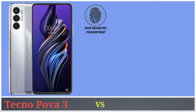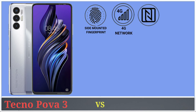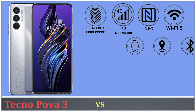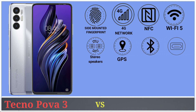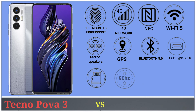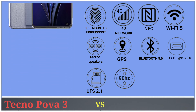Let's talk about connectivity. Tecno Pova 3 has a side-mounted fingerprint sensor, supports only 4G network, NFC, Wi-Fi 5, stereo speakers, GPS, Bluetooth 5.0, USB Type-C, UFS 2.1 storage, and a 90Hz high refresh rate display.